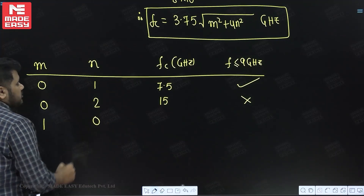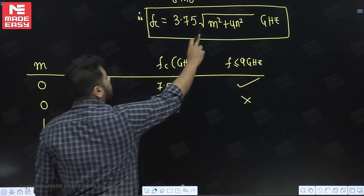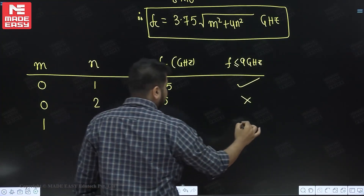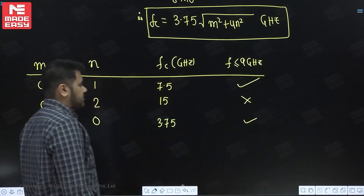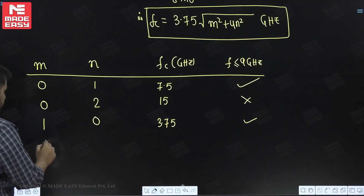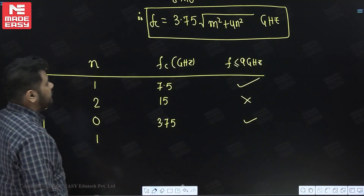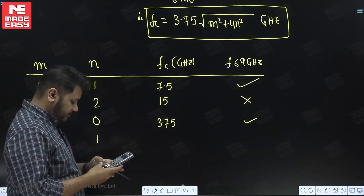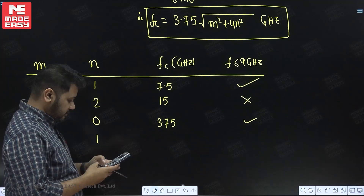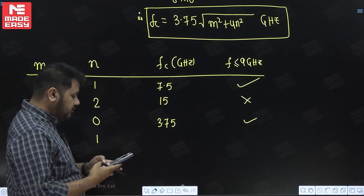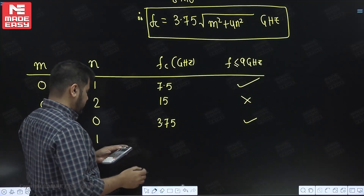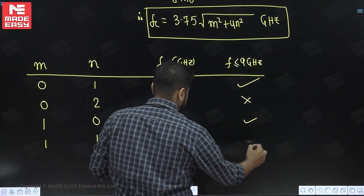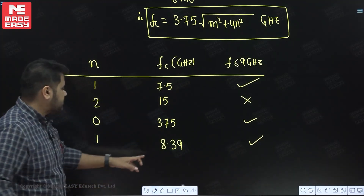For m=1, n=0: FC = 3.75 gigahertz. Since 3.75 GHz is less than 9 GHz, mode (1,0) passes. For m=1, n=1: FC = 3.75 times root of 5 = 8.39 gigahertz. Since 8.39 GHz is less than 9 GHz, mode (1,1) also passes.